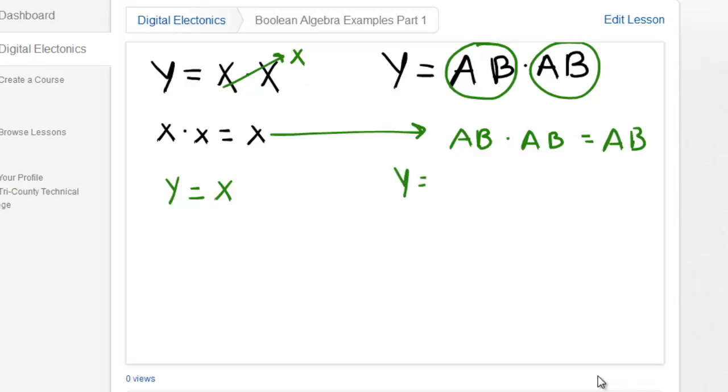So this just becomes y equals a and b. Another way I could look at this is I can rearrange that expression y equals a and b and a and b to be a, a, b, b. And then a and a becomes what? Just a. So we have y equals a and b and b and b and then b and b is the same as b. So we end up with the same answer. y is equal to a and b.